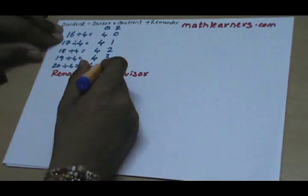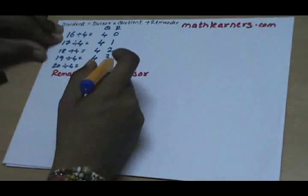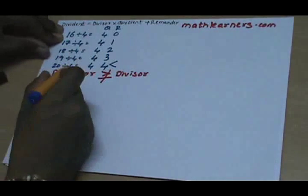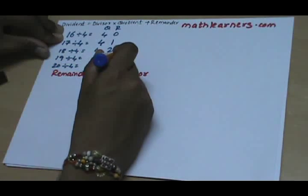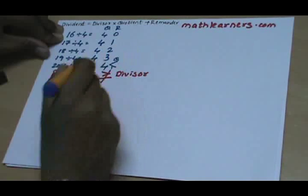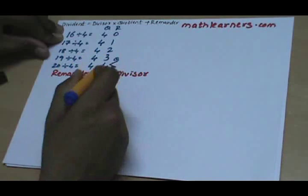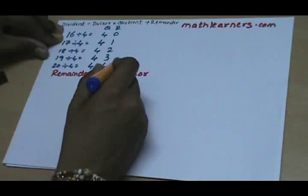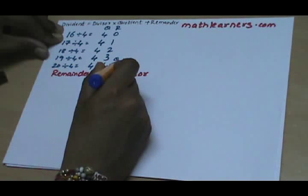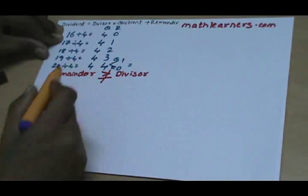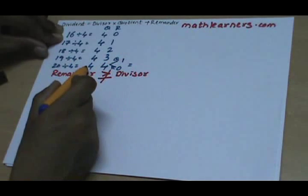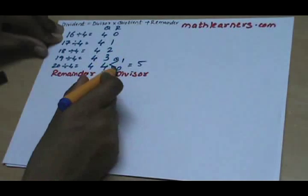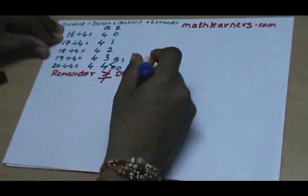So what we are exactly doing here: we will be dividing that remainder 4 by the divisor 4, and the quotient will be obtained as 1 and remainder as 0. This quotient will be added to the previous quotient, so that will come as 5 and the new remainder will be 0.